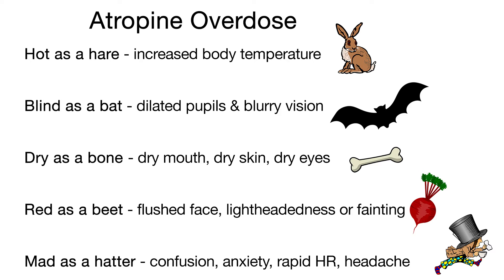Hot as a hare: increased body temperature. Blind as a bat: dilated pupils and blurry vision. Dry as a bone: dry mouth, dry skin, dry eyes. Red as a beet: flushed face, lightheadedness or fainting. Mad as a hatter: confusion, anxiety, rapid heart rate, or headache.